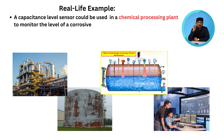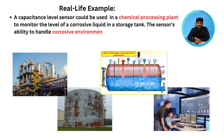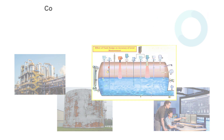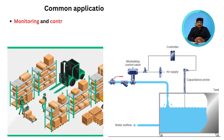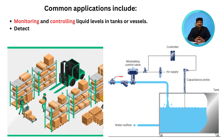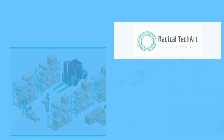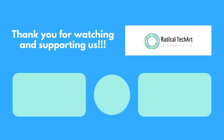A real-life example is a capacitance level sensor used in a chemical processing plant to monitor the level of corrosive liquid in a storage tank. The sensor's ability to handle corrosive environments makes it suitable for such applications, providing accurate level measurements for inventory management and process control. Common applications include monitoring and controlling liquid levels in tanks or vessels, detecting the presence or absence of liquids in pipelines, and managing inventory levels.